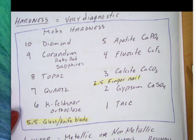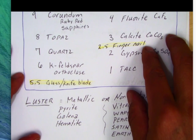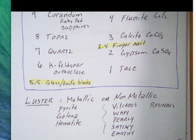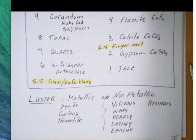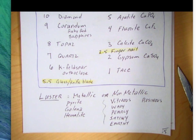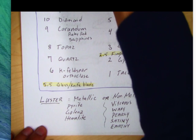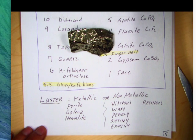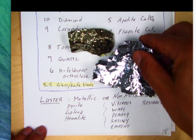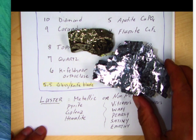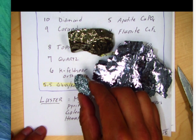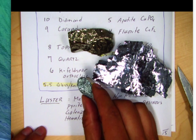The next category is luster. Ideally, luster is one of the first things you look at — it's the way the mineral reflects light. There are two basic categories: a mineral will either have a metallic luster, like our pyrite here — metallic, brass-like — or our galena, a very nice sample with metallic luster, and hematite, the specular hematite. All good examples of metallic luster.